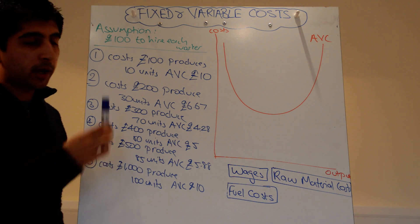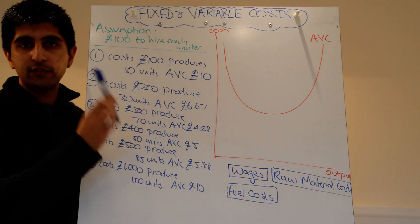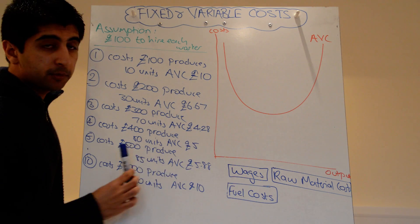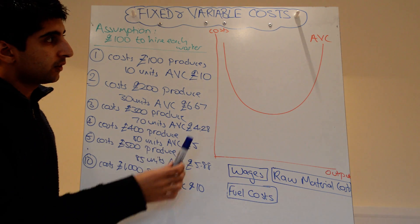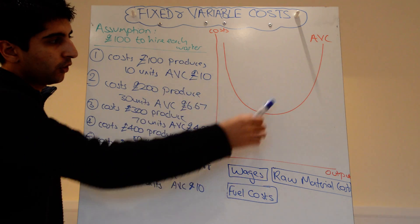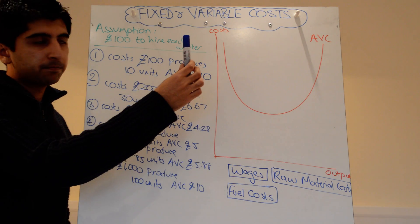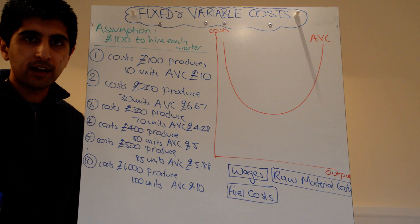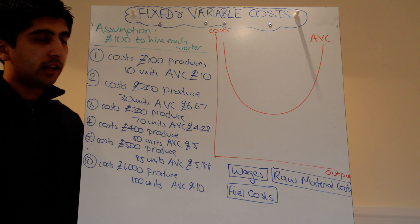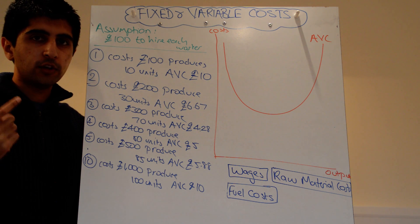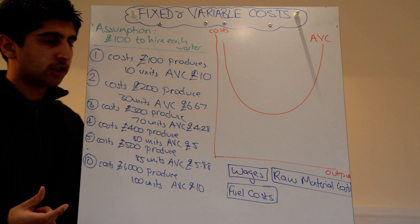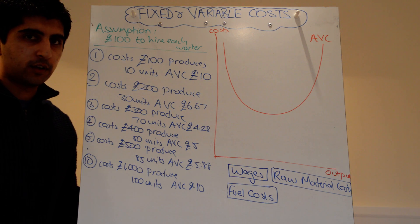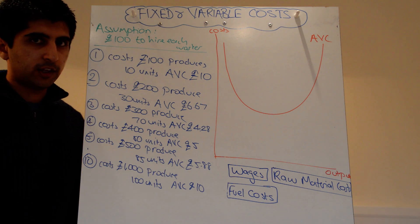So in this video, you've learnt about fixed costs and variable costs, the different types of each, and how they look on a diagram. Next we're going to put them all together, linking in marginal cost and average cost, and I'll explain the shapes of those curves too.